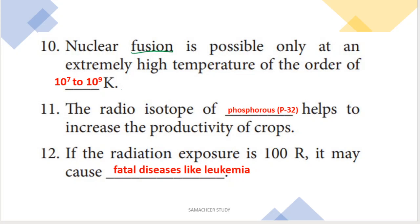Next: the radio isotope of phosphorus (P-32) helps to increase the productivity of crops. Also, if the radiation exposure is 100 Roentgen, it may cause fatal diseases.